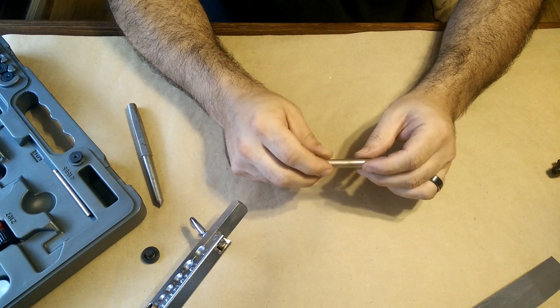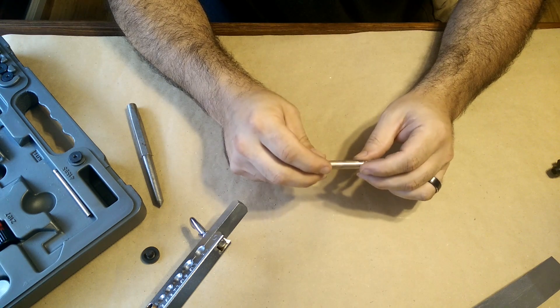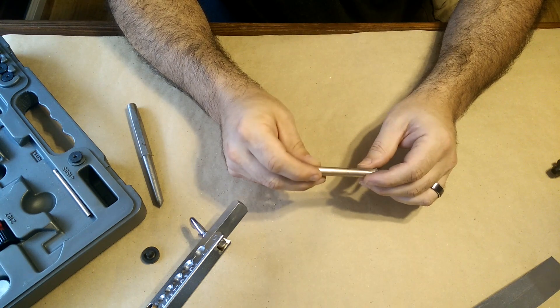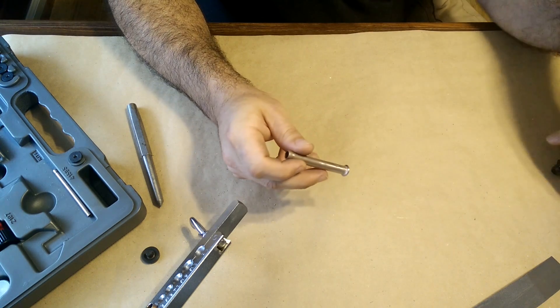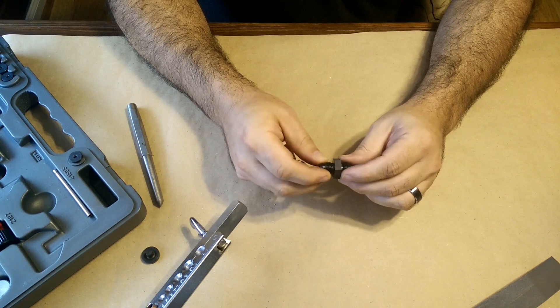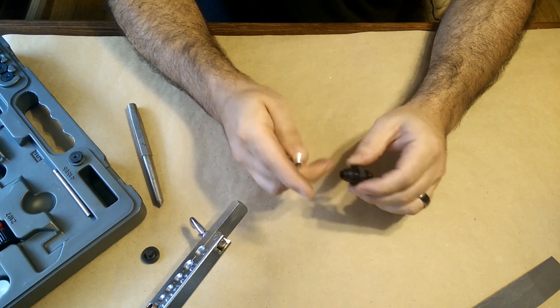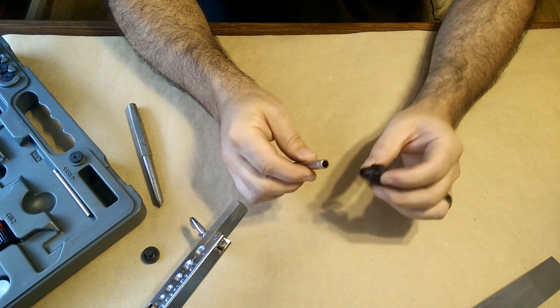So in the middle, I have a junction there where two pieces of hard line come together. So there are two ways to do this. You've seen my video on how to flare hard line for AN fittings.